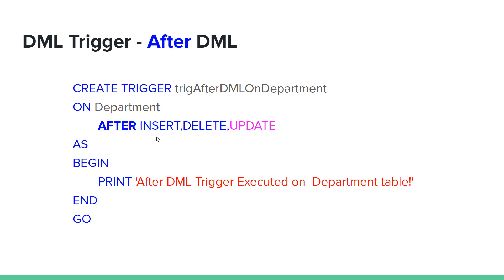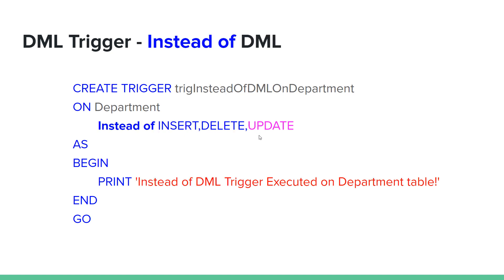After DML trigger: insert, delete, and update execute first, then the trigger fires. With instead of DML, insert, delete, and update are intercepted and the trigger executes instead.